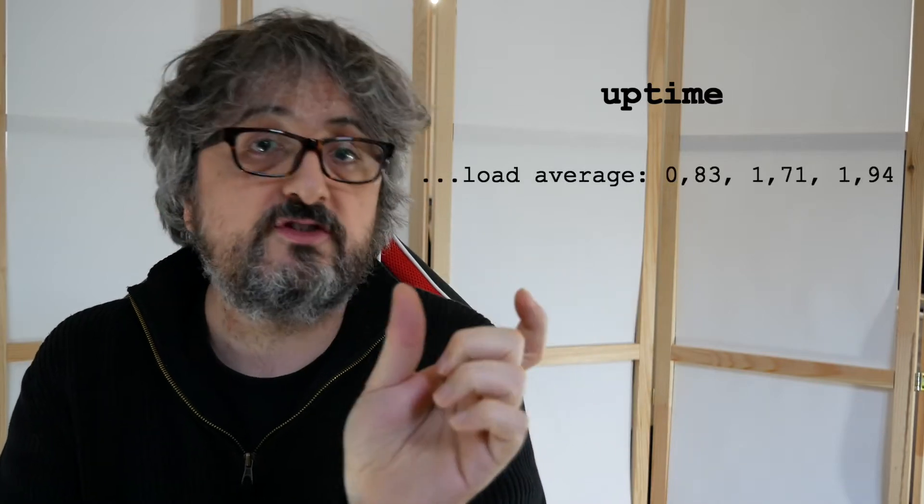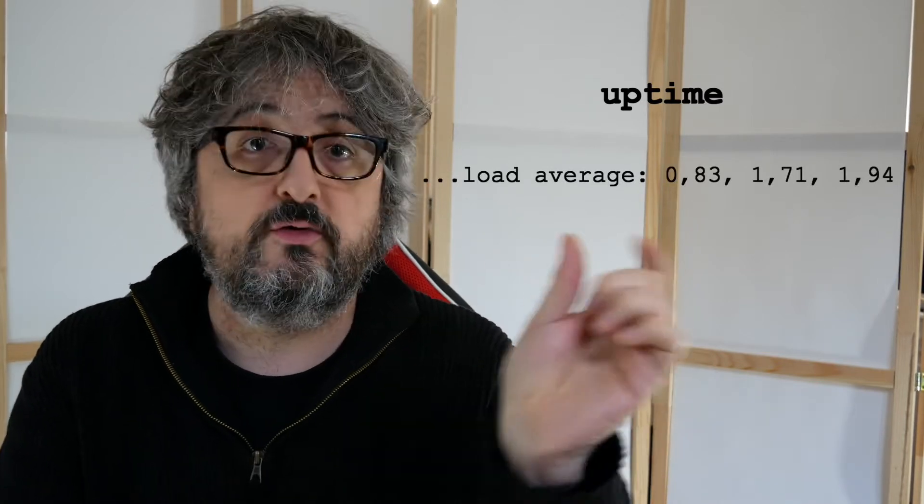So what's the load average? The load average is a metric we have on Unix-type systems like Linux, OS X, and BSD. This metric gives me an idea of the activity on the machine. I can access the load average metric by typing the uptime command. The uptime command gives me the uptime of the machine, and at the end we have load average — sometimes load averages — with three numbers. On Linux, it's very common to use the top command to get information on the machine, and on the top right we also have load average with three numbers.